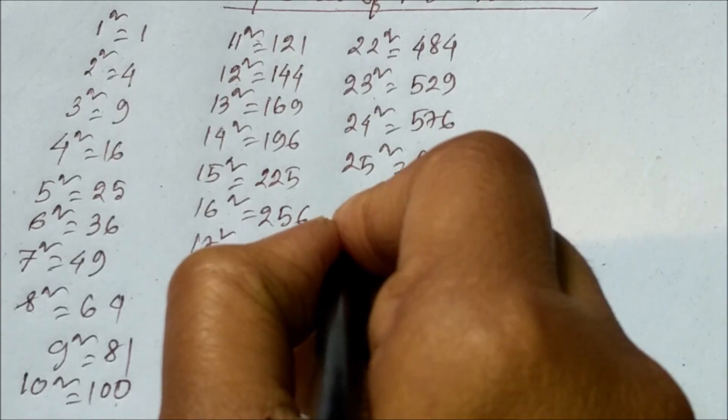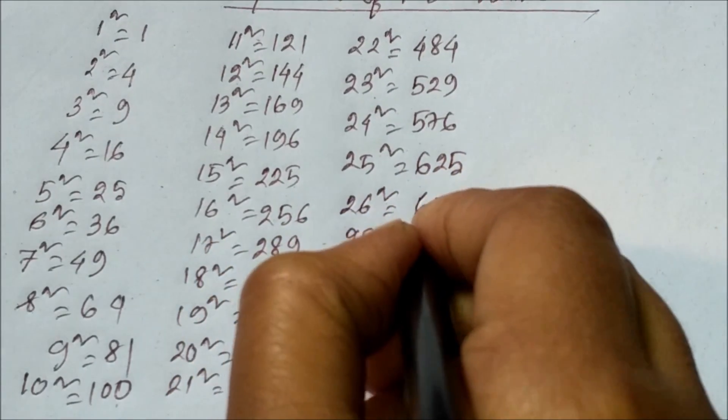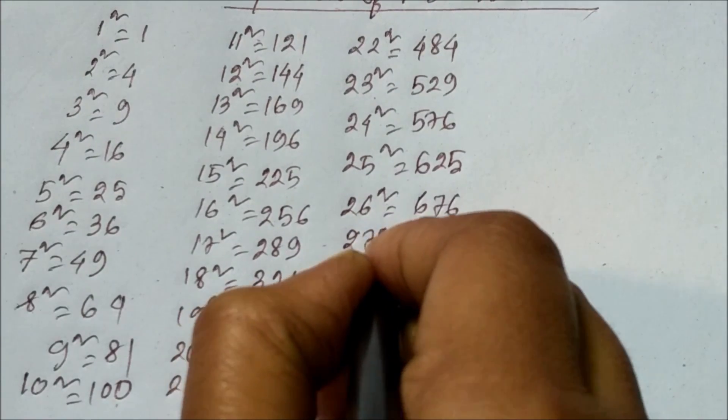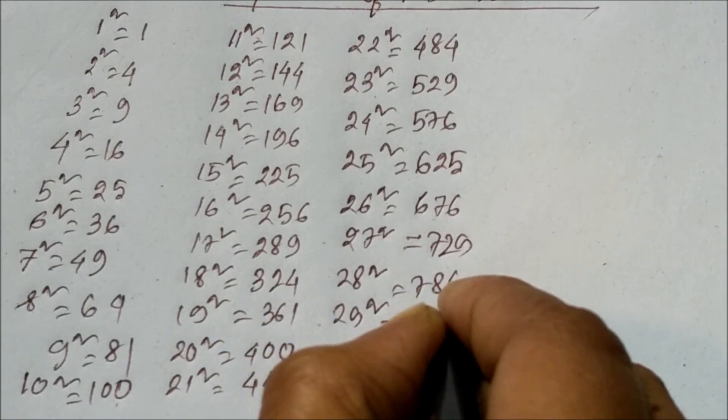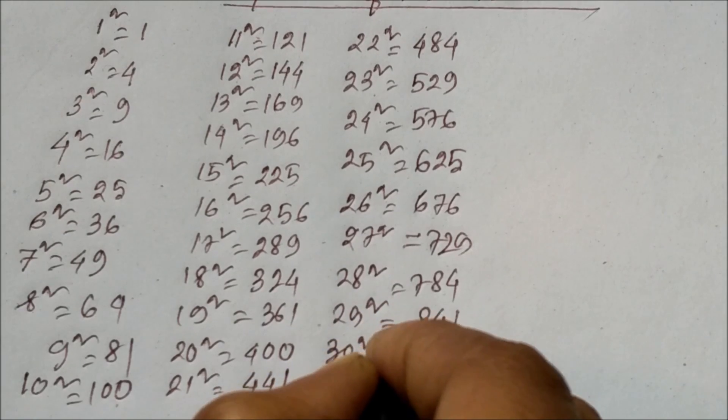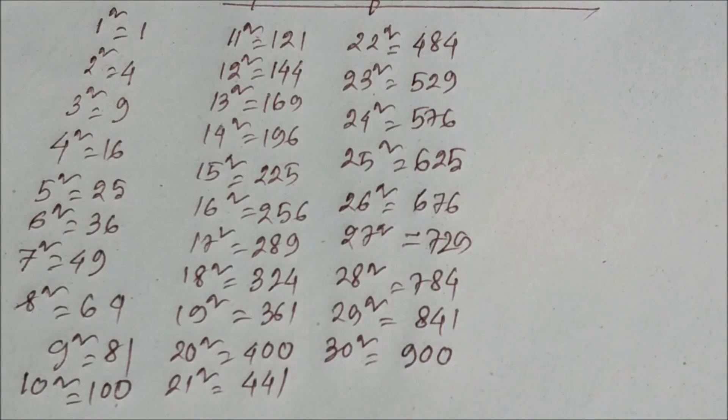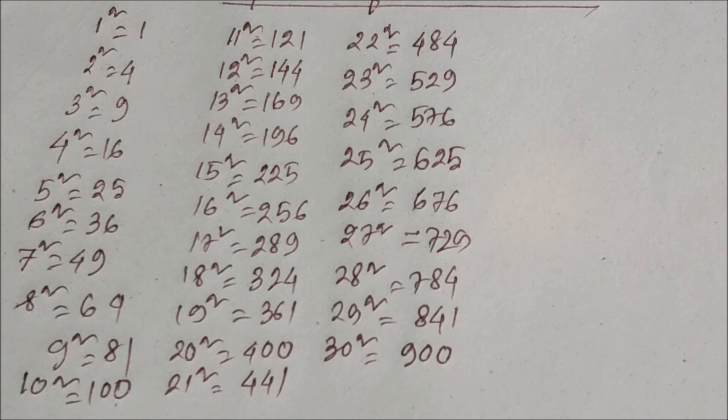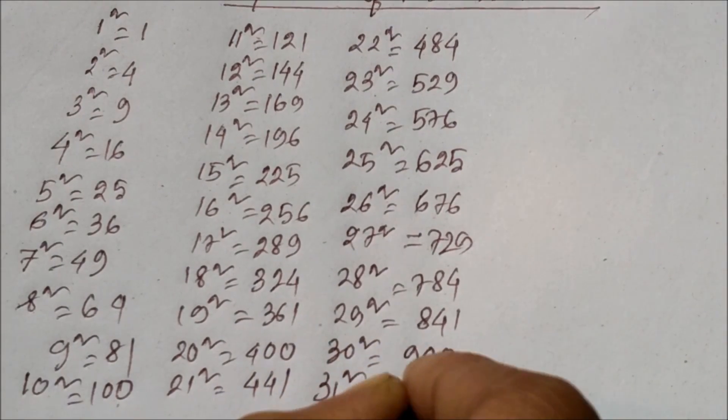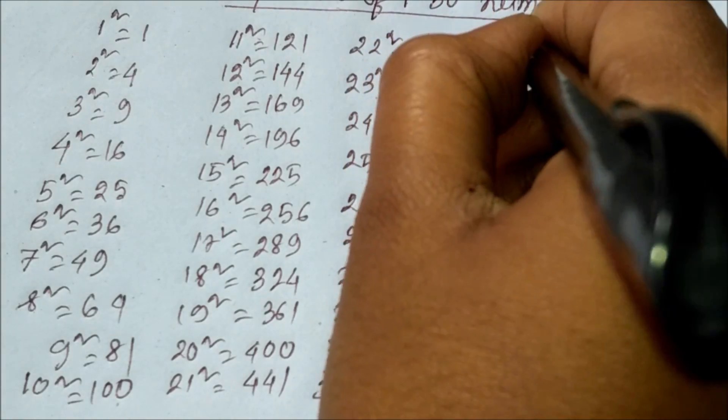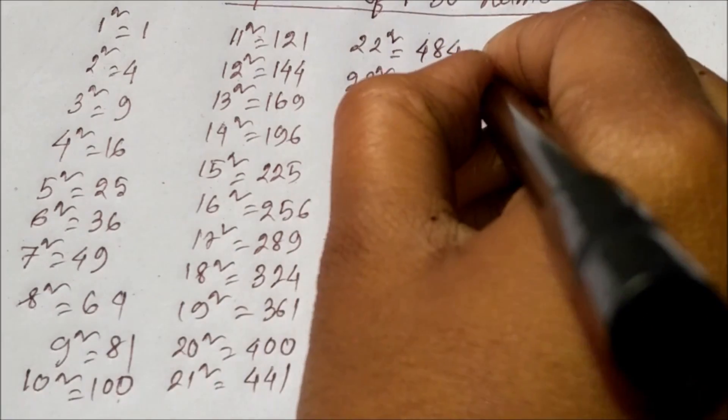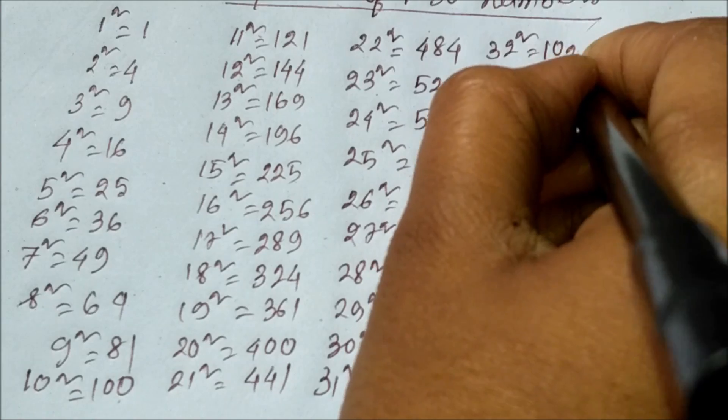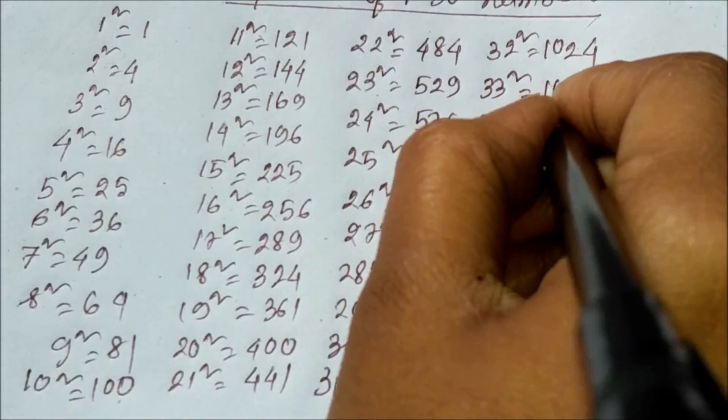27 square equals 729, 28 square equals 784, 29 square equals 841, 30 square equals 900, 31 square equals 961, 32 square equals 1024, 33 square equals 1089, 34 square equals 1156.